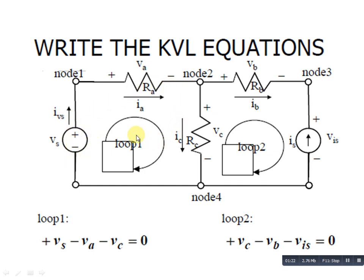In loop 2, we apply the same method as loop 1. In loop 2, this resistor is denoted starting with a plus sign. Then this is minus, this is plus, this is minus, and this is minus — for both loop 1 and loop 2.